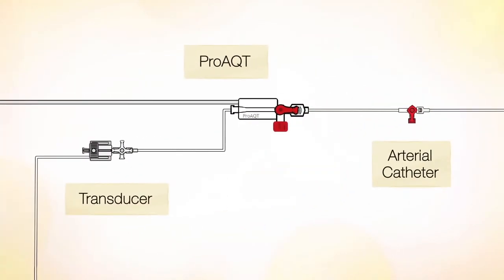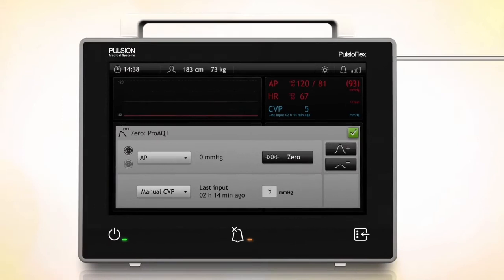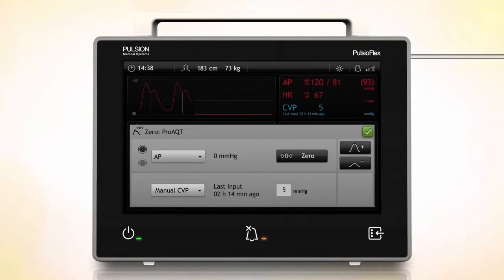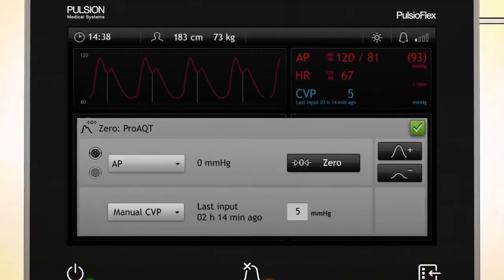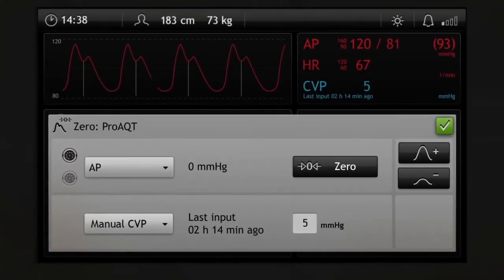Close the arterial system for the measurement. The pressure curve reappears on the monitor. Finally, enter the current CVP for SVRI calculation. When you're finished, close the window by tapping the check mark.